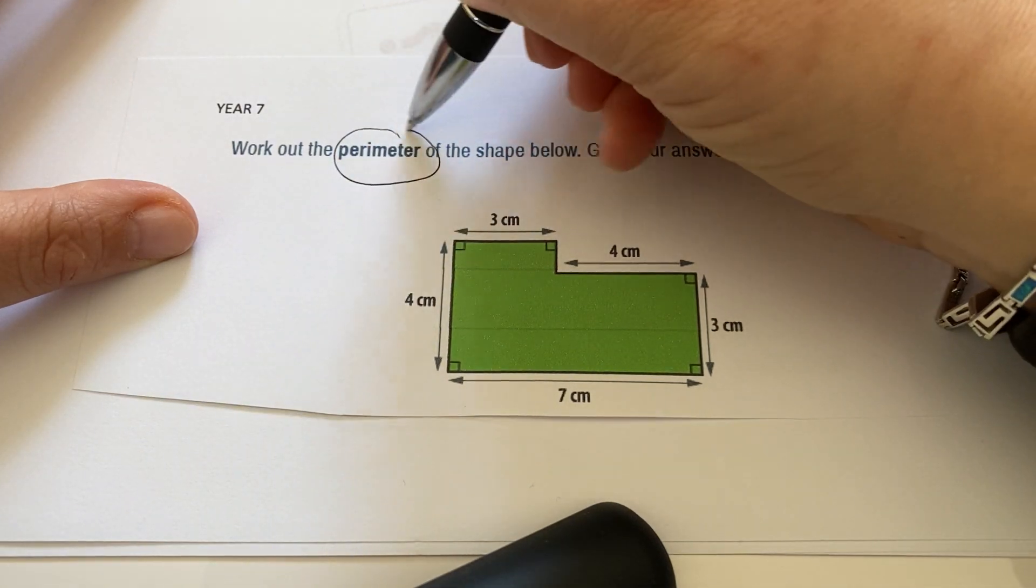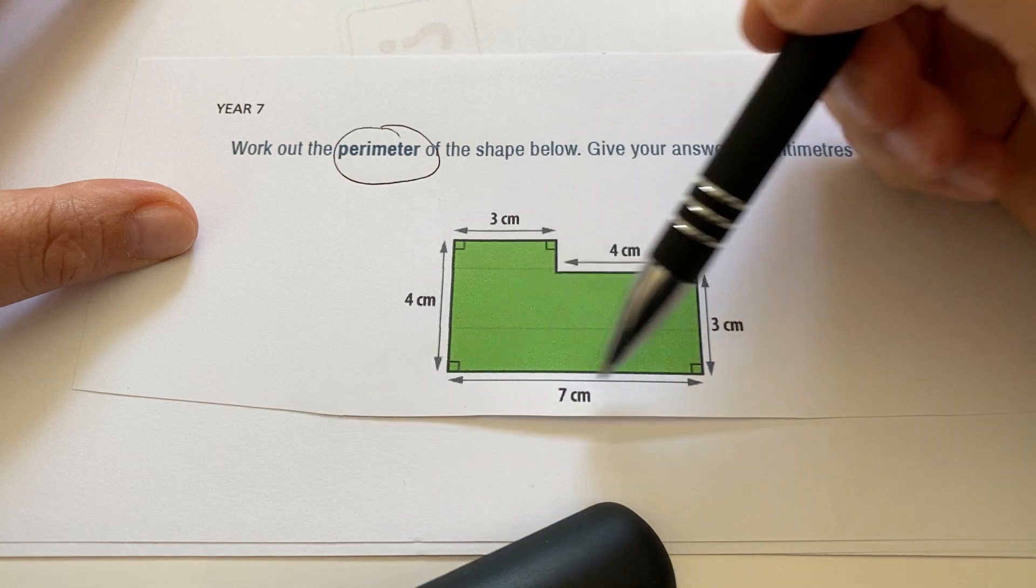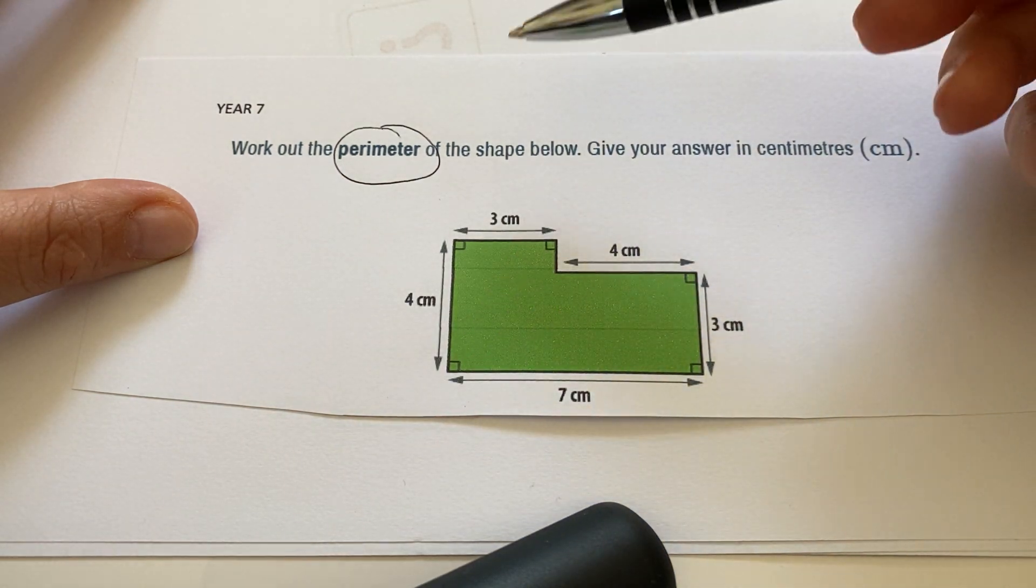We know that perimeter is the total length around the outside of the shape, so we're adding up every single side length.